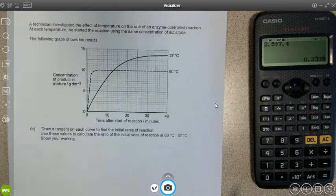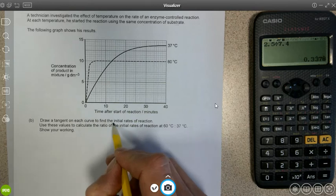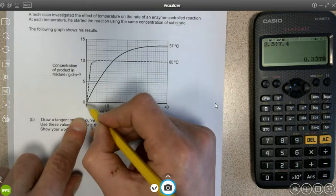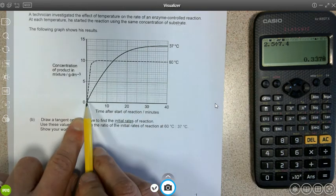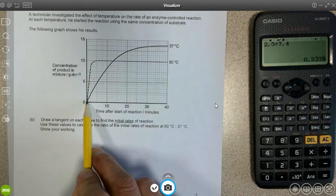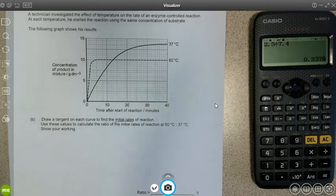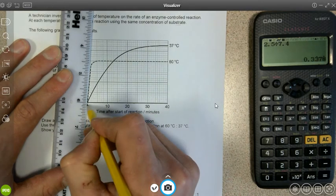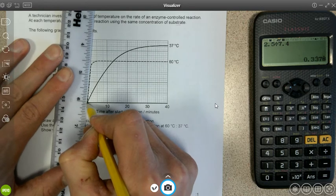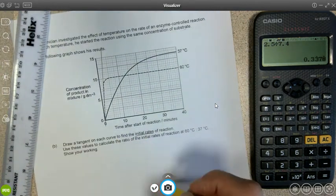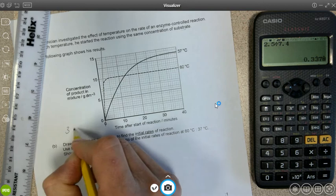The graph shows his results. So draw a tangent to find the initial rates. To do that, to find the initial rates, we want to know what the gradient is close to the very start of the reaction, and that will obviously be the highest rate of the reaction because that is when the concentration of the substrate is greatest. We're going to do that for both curves, for the curve at 60 degrees we start from the origin up to there.